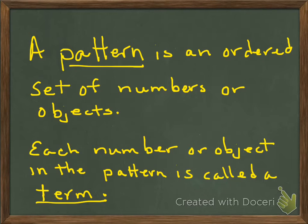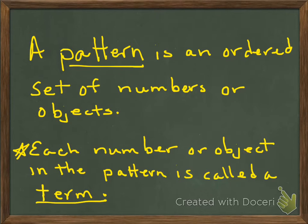A pattern is an ordered set of numbers or objects, and of course we see these every single day in our world. The other definition we need to make sure we understand is this one: each number or object in that pattern is called a term — T-E-R-M, term. So we're going to get started right away and look at a word problem, and we're going to take a look at the terms and the pattern in this word problem.